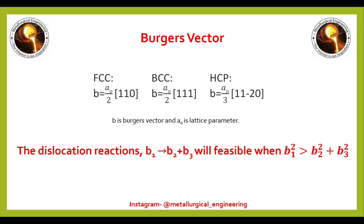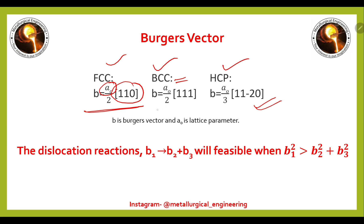Now we will see the common Burgers vector used in daily practice for cubic crystals: FCC, BCC, and HCP. For FCC, the Burgers vector is b = (A₀/2)⟨110⟩. For BCC, b = (A₀/2)⟨111⟩. For HCP, b = (A₀/3)⟨11̄20⟩.